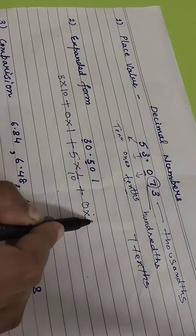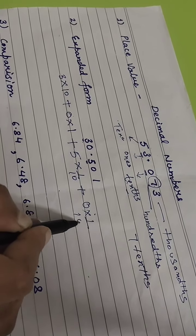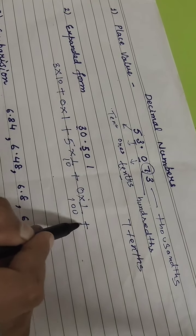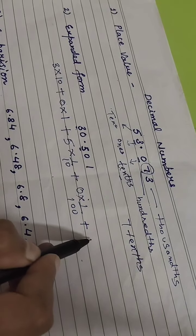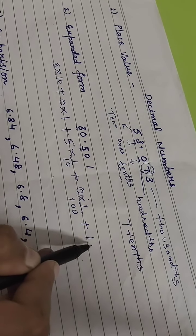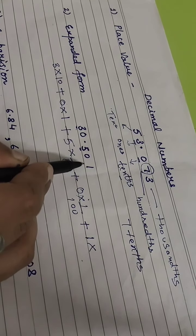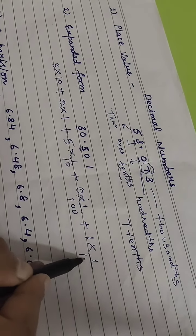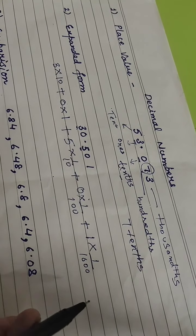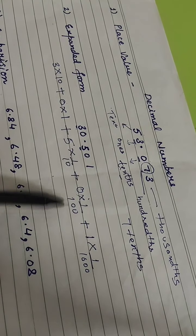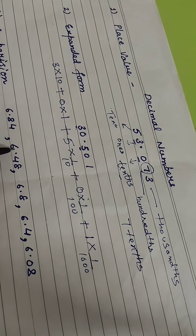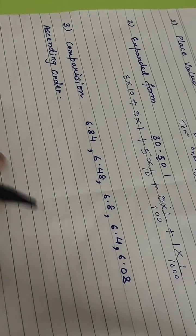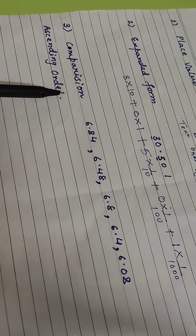Again, write the digit and its place, which is hundredths, then add it. The last digit's place is thousandths, meaning one divided by one thousand. In this way you can expand the decimal number.